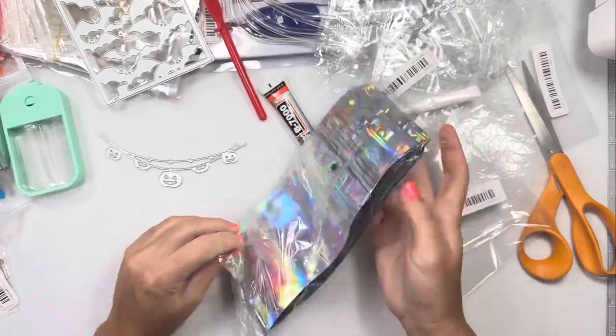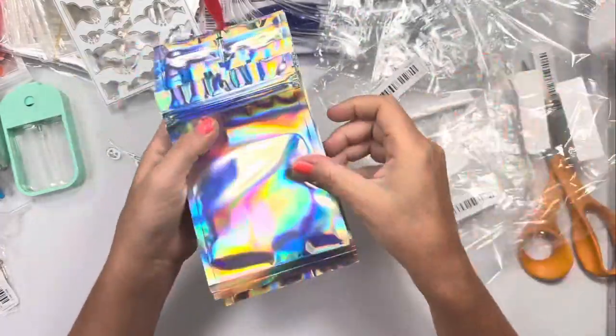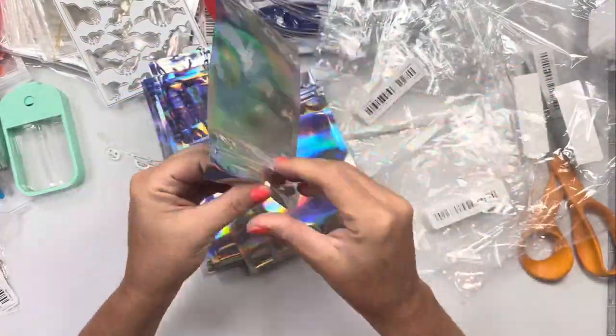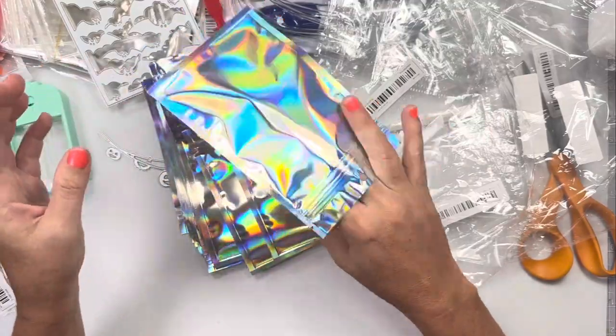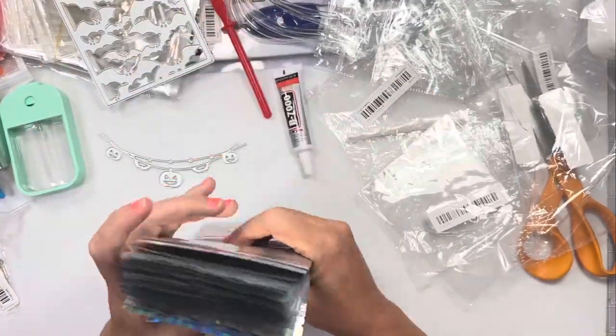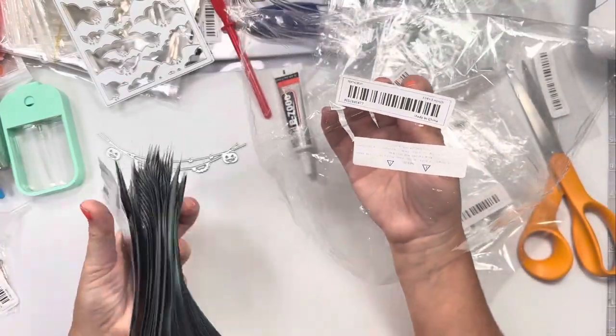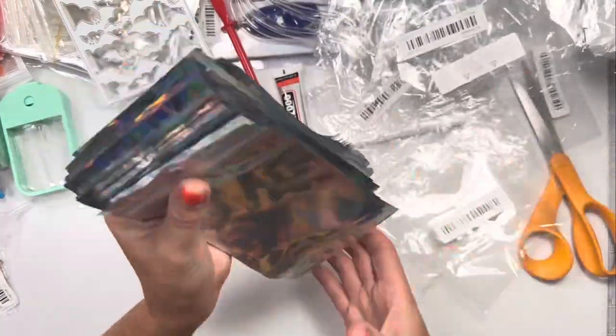Next I got some more happy mail supplies. These are the holographic baggies and one side is clear and then the other side obviously the holo. And you get a bunch of these. So these are four inch by 5.9 so four by six basically.